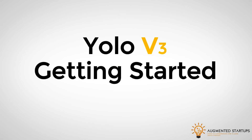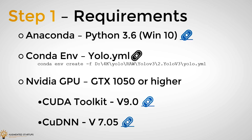Let's look at the requirements. First, we'll need Anaconda with Python 3.1 for Windows 10, as well as our Conda environment. You can clone my Conda environment and you'll have all the packages needed to run PyTorch and YOLO version 3. Make sure you have an NVIDIA graphics card — I recommend a GTX 1050 or higher. We'll also need CUDA Toolkit version 9 and cuDNN version 7.05. Just know that CUDA and cuDNN can be installed via Anaconda, or I'll give you the direct download links.